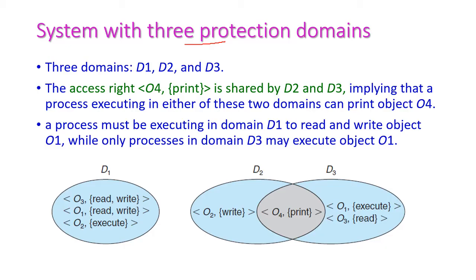Let us see an example: a system with three protection domains — domain 1, domain 2, and domain 3. Domain 1 contains three objects: object 1 with read and write access, object 2 with execute only, and object 3 with read and write. Object 4 is allowed to print for both domain 2 and domain 3. Object 1 is allowed only read and write in domain 1, but is allowed execute in domain 3.